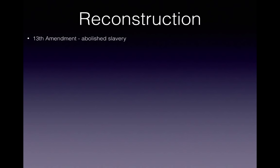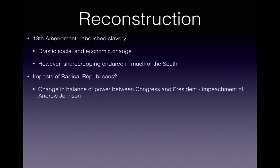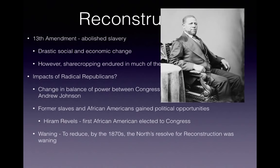Let's jump to Reconstruction. The 13th Amendment abolished slavery — this was drastic social and economic change. However, the South tried to get around this by instituting things like sharecropping, which had conditions very similar to slavery. Radical Republicans were a group that sought to change the balance of power between Congress and the President — think of the impeachment of Andrew Johnson. Former slaves and African Americans gained political opportunities. Hiram Revels was the first African American elected to Congress, and quite a few African American men were elected to Congress. By the 1870s, the North's resolve for Reconstruction was waning — meaning decreasing.